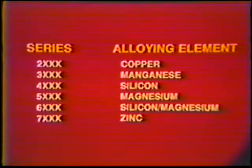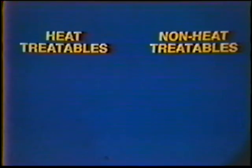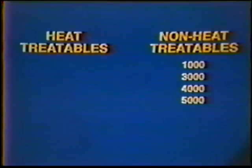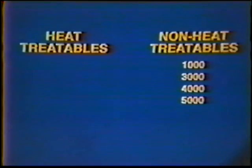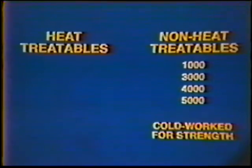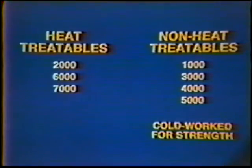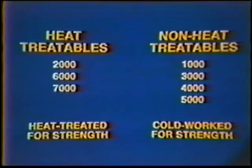The various types of aluminum can be divided into two groups: heat treatable and non-heat treatable. The 1000, 3000, 4000, and 5000 series are non-heat treatable, meaning these groups cannot be heat treated to develop greater strength. The 2000, 6000, and 7000 series are the heat treatable alloys and can be heat treated to develop strength or to alter their properties.